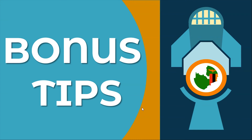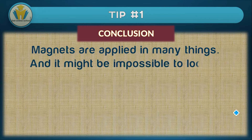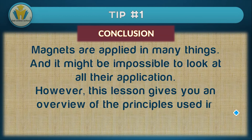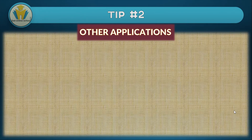Now let's get to our bonus tip section. The first tip is a conclusion on what we've covered: magnets are applied in many things and it's not possible to cover all of them in one video, but you should be familiar with how magnets are used in basic appliances such as the relay switch, the electric bell, and the reed switch. If you're asked to list five applications of magnetism you only have three — where will you source the other two?